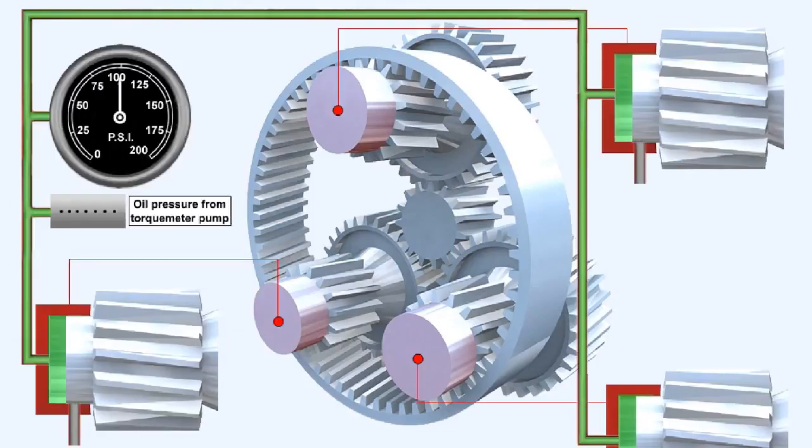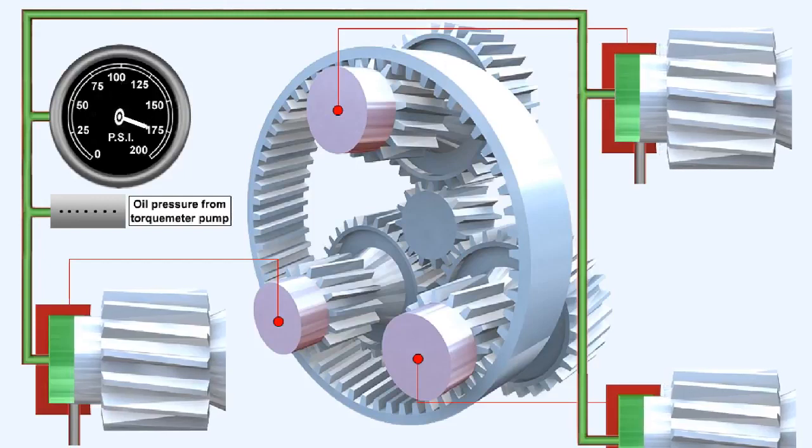If engine power output increases, the axial thrust being transmitted by each gear also increases, which forces its shaft further into its retaining cylinder. Thus the shaft is forced into a new position where it blocks the bleed hole. The torque meter oil pressure, being unable to escape, now builds up to a new higher value, until it's able to force the gear shaft back into the sensitive position, where once again it's able to balance the axial thrust being developed by the helical gear.